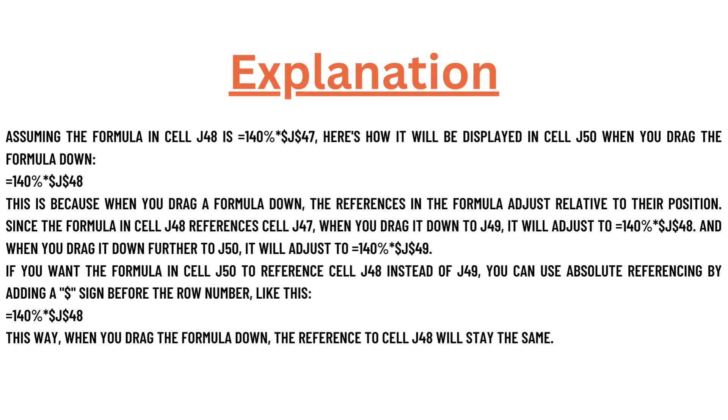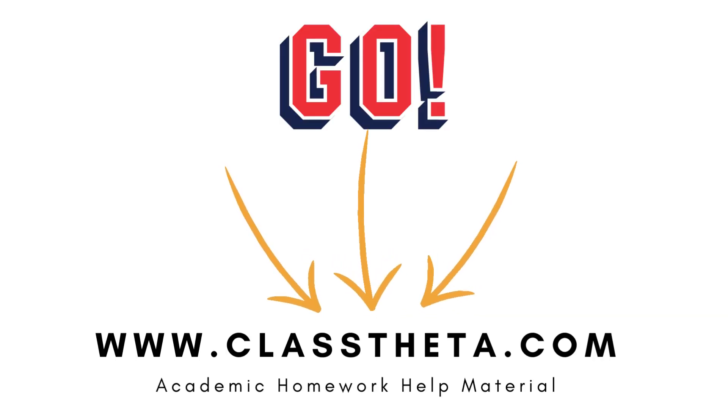To explain this further, assuming the formula in cell J48 is =140%*J47, when you drag down the formula to J50, it will be displayed as =140%*J48. So that's the correct answer.